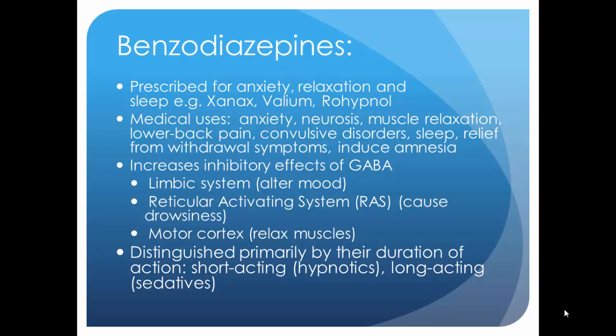Benzodiazepines were widely used and replaced barbiturates. Examples include Xanax, Valium, and Rohypnol — or "roofies" — which you may have heard of in the context of date rape. Beyond anxiety, benzodiazepines are used for other conditions such as muscle pain, as an anticonvulsant, and to help patients detox from alcohol or opiates. They are often used in those first few days to curb withdrawal symptoms and make the patient more comfortable during the uncomfortable withdrawal from opiate and narcotic addiction.